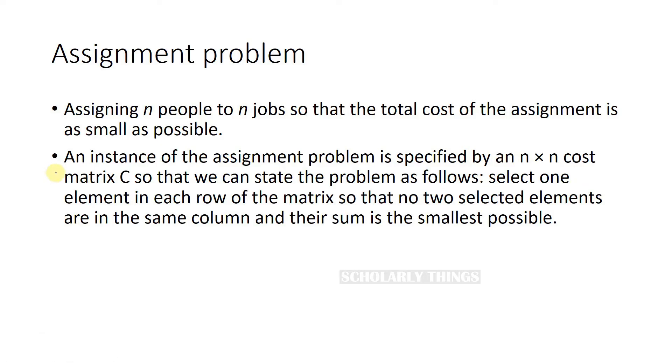Let me redefine the problem statement. An instance of the assignment problem is specified by an n cross n cost matrix C so that we can state the problem as follows: select one element in each row of the matrix so that no two selected elements are in the same column and their sum is the smallest possible.